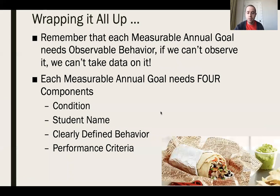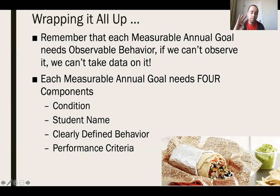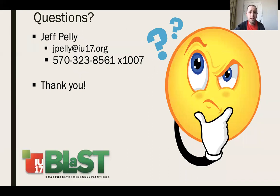To wrap it all up: make sure you have that observable behavior — if you can't observe it, you can't collect data on it. Remember those four components: condition, student's name, clearly defined behavior, and performance criteria. Thank you all for getting through this IEP Best Practice Series on Measurable Annual Goals. This was Jeff Pelley from IU 17 — contact me at jpelli@iu17.org or call 570-323-8561, extension 1007. Looking forward to seeing you next time!